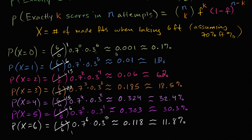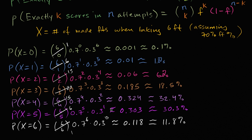In the last video, we worked through essentially the probability distribution for this random variable defined as the number of free throws you make when taking six free throws, assuming you have a 70% free throw percentage. And I suggested that why don't you visualize this, draw, graph this probability distribution, this binomial probability distribution.